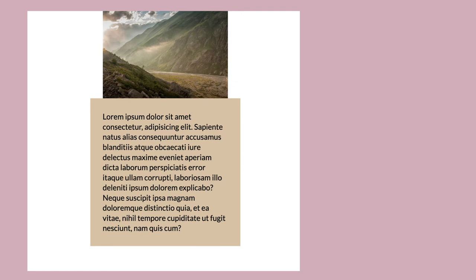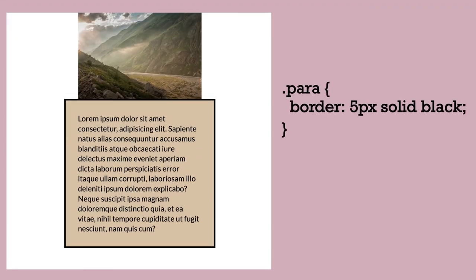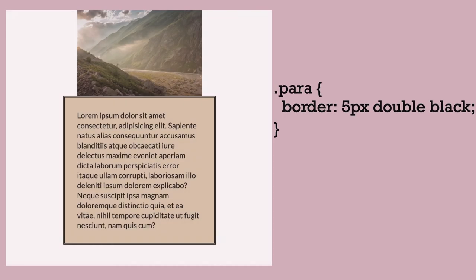Every box has a border, even if it's not showing — in other words, it has a default width of 0 pixels. The border separates the padding and the margin. If we want a visible border, we're going to need three values: width, style, and color. For example, it would look like this — border: 5 pixels solid black. You can give it any color or width, and there are different styles like double, dashed, and dotted.